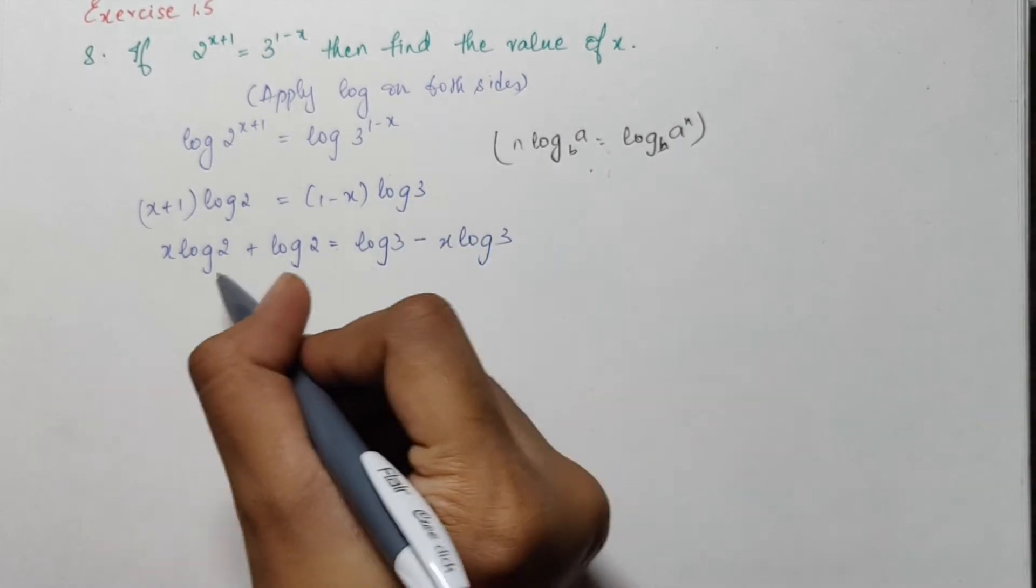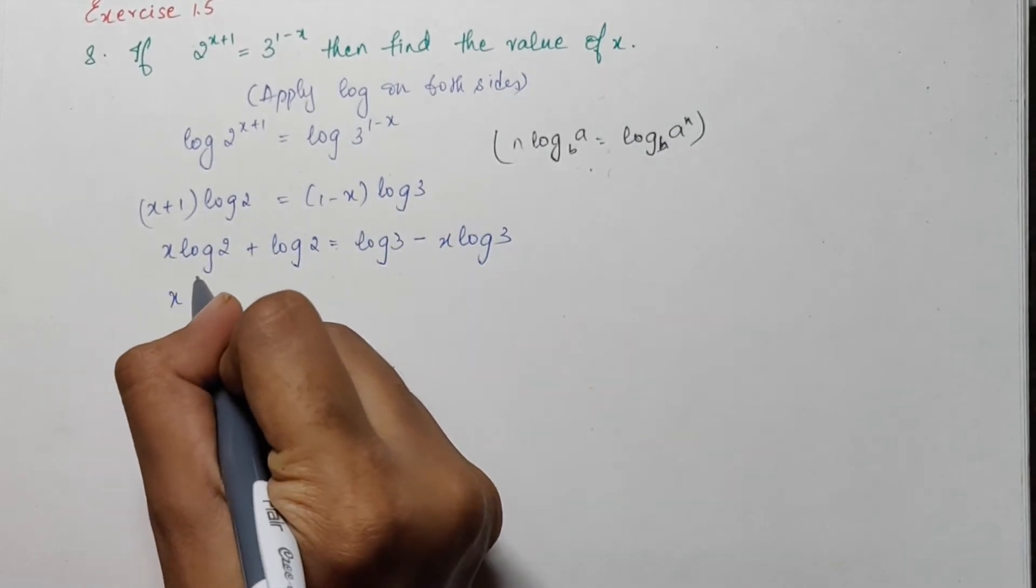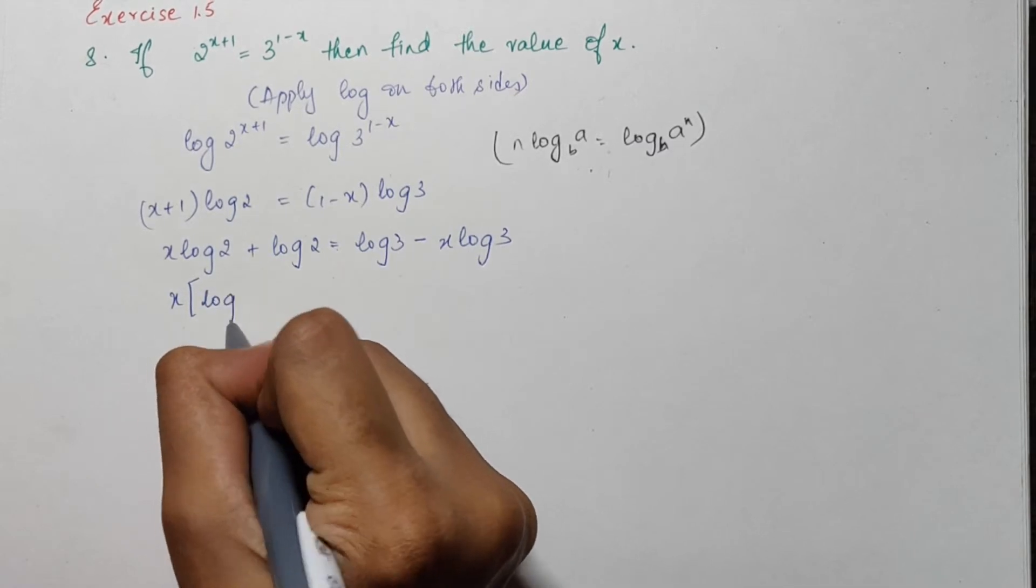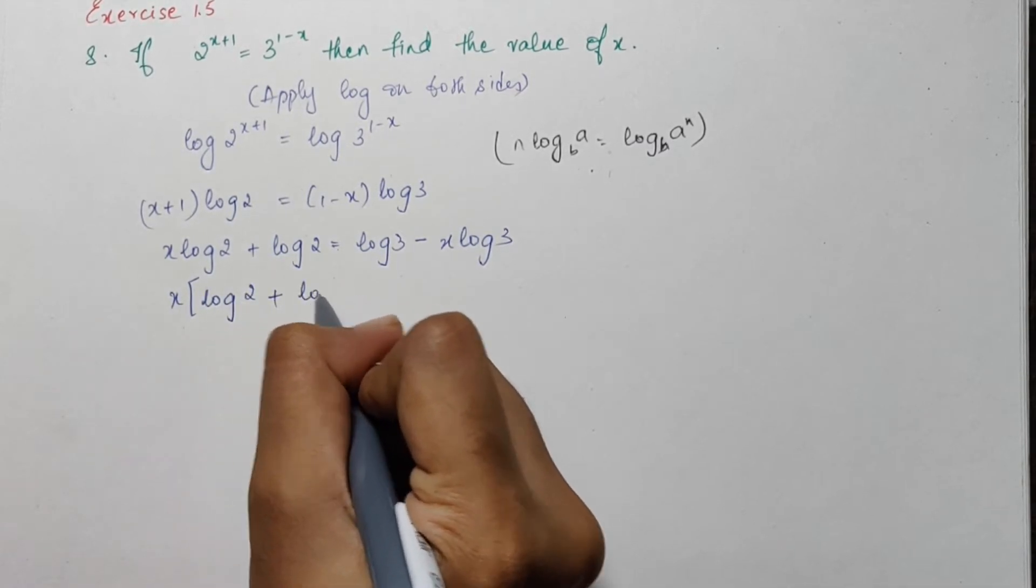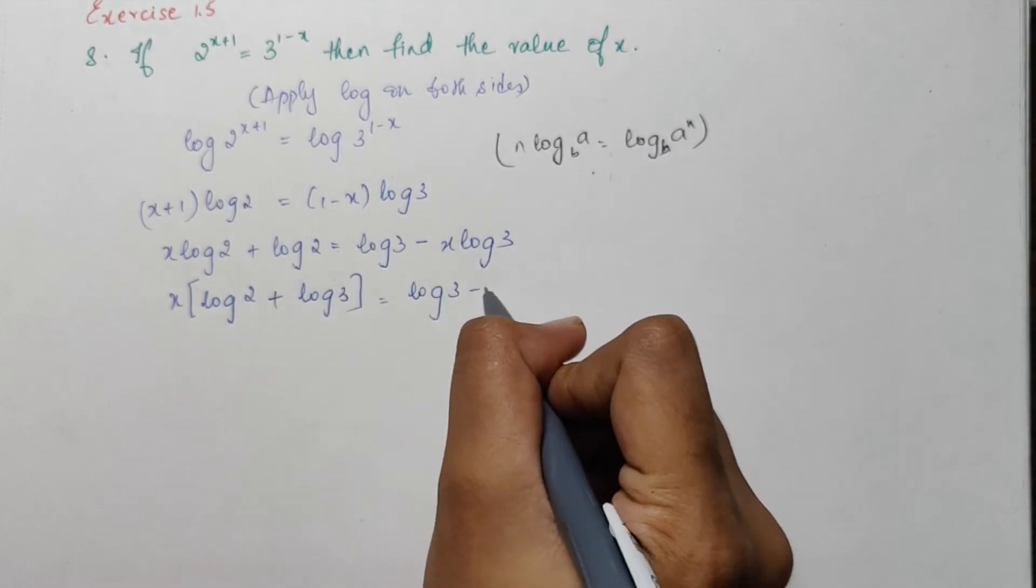I will get all the x terms on one side and the other terms on the other side. So left hand side I would have all the x terms and when I take x as common I would have log 2 plus log 3, and on the right hand side I would have log 3 minus log 2.